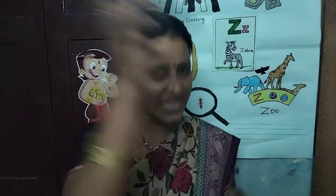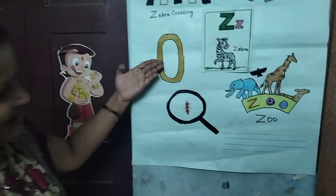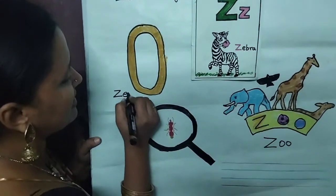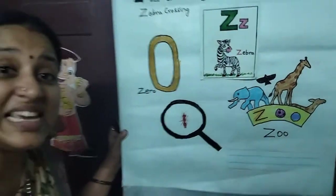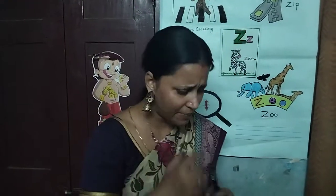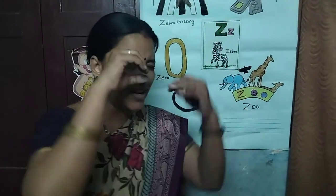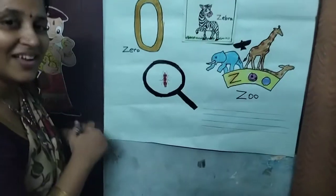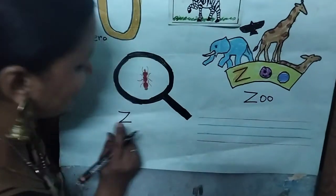Then when it is nothing, what do you say? How will you write that number? Zero — isn't it? Zero also starts with the letter Z. Then when you want to see something that is very tiny, what will you do? You will zoom it. Zoom — that also starts with the letter Z.